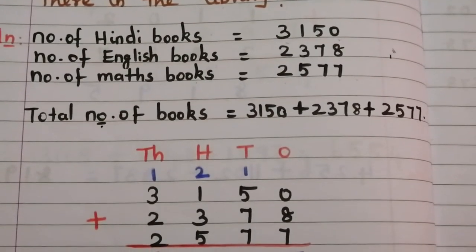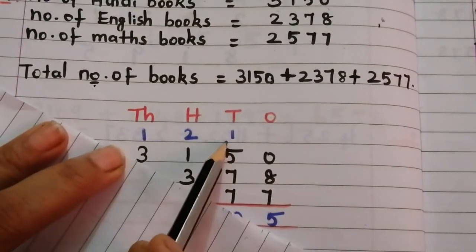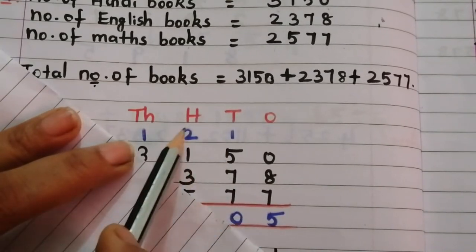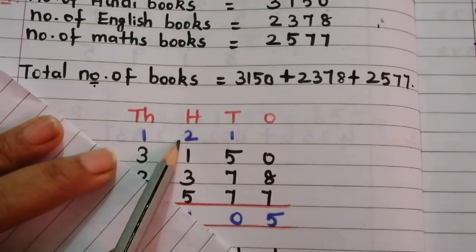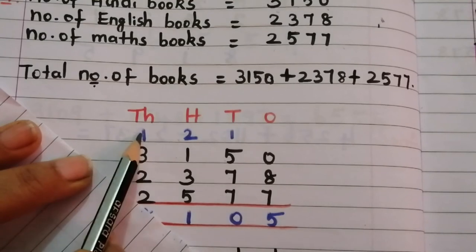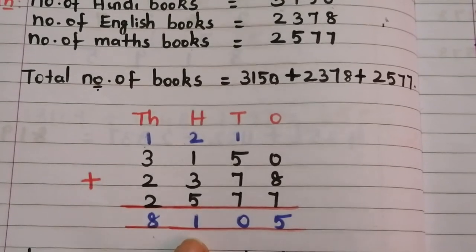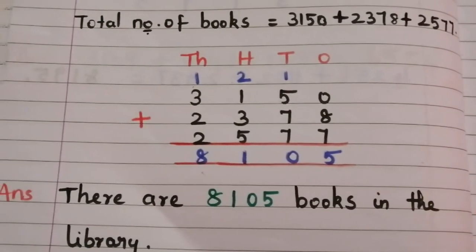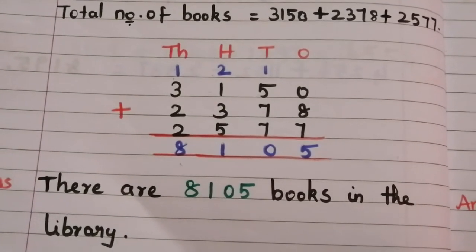Write the three values vertically and add. Ones: 8 plus 7 is 15 — put 5, carry 1. Tens: 7 plus 7 is 14, 14 plus 5 is 19, 19 plus 1 is 20 — put 0, carry 2. Hundreds: 5 plus 3 is 8, 8 plus 1 is 9, 9 plus 2 is 11 — put 1, carry 1. Thousands: 2 plus 2 is 4, 4 plus 3 is 7, 7 plus 1 is 8. The answer is 8,105. Therefore, there are 8,105 books in the library.